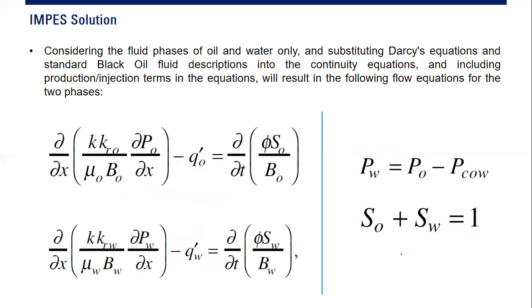Considering the fluid phases of oil and water only, and substituting Darcy's equation and standard black oil fluid descriptions into the continuity equations, and including production and injection terms, we arrive at the flow equations for two phases — one for oil and one for water — neglecting gas for now.